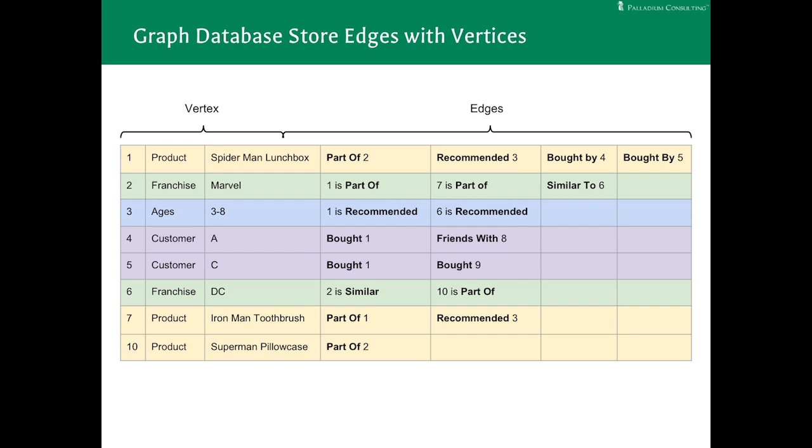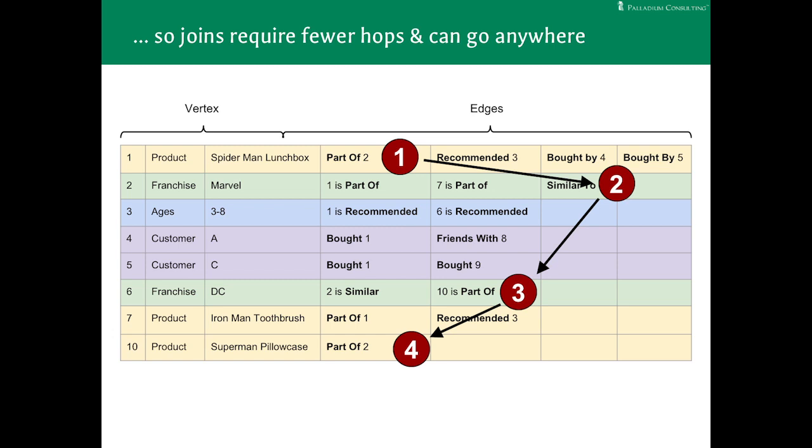But for our same lunchbox to pillowcase query, my graph database is only going to make four hops because it can hop directly from the lunchbox to Marvel because the edge to Marvel is held inside the lunchbox vertex. Similarly, from Marvel, I can jump straight to DC, and then from DC, I can jump straight to the pillowcase. When you start thinking about this join pattern being multiplied over many variable path joins, you can start to see where this locality of reference can make even a query which can be expressed in graph form and relational form execute faster in a graph database. Not all queries will, but ones that do a lot of hopping around will.